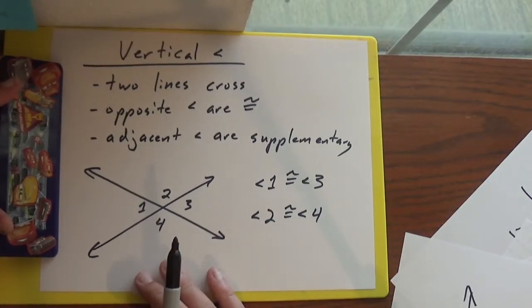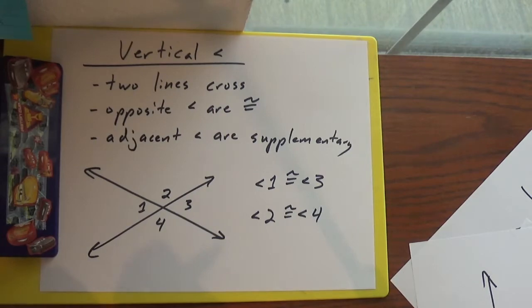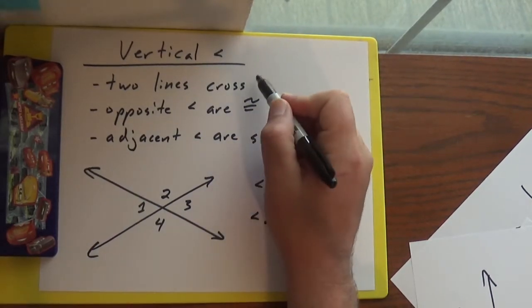Vertical angles. They really like this in textbooks and standardized tests. I think SAT, that sort of thing. So we've got two lines that cross.